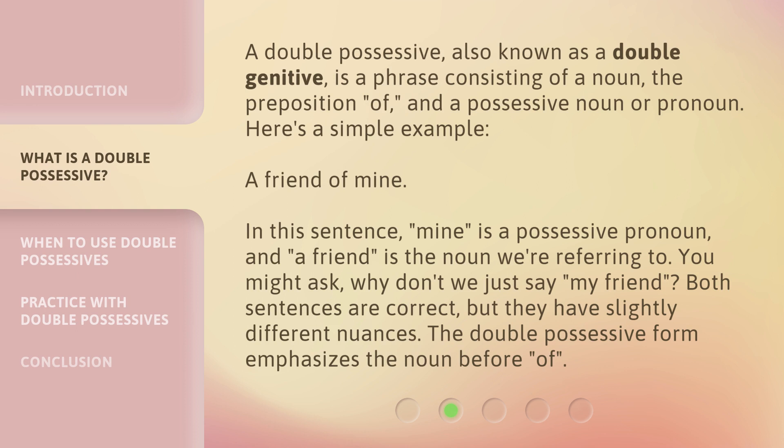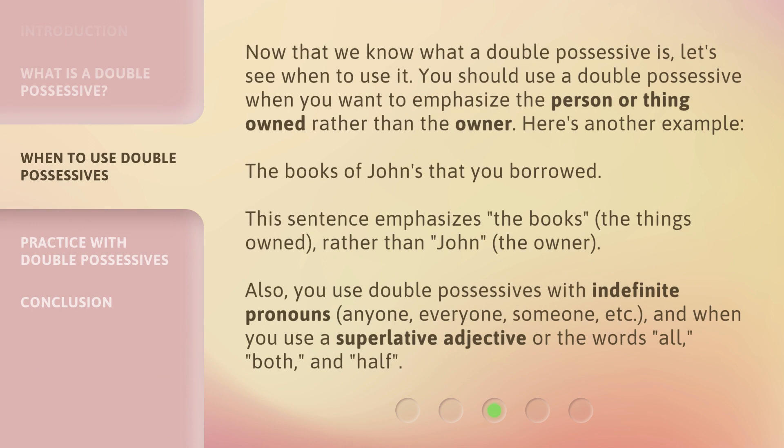The double possessive form emphasizes the noun before 'of.' Now that we know what a double possessive is, let's see when to use it. You should use a double possessive when you want to emphasize the person or thing owned, rather than the owner.